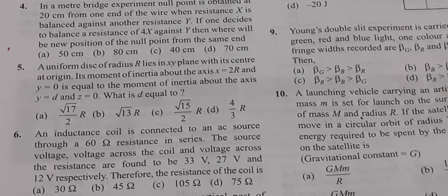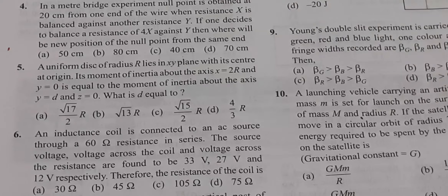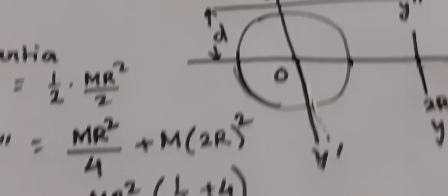A uniform disk of radius R lies in the XY plane with its center at the origin. Its moment of inertia about the axis x = 2R, y = 0 equals the moment of inertia about the axis y = D, z = 0. We need to find D. There are 4 choices. This is a standard problem.